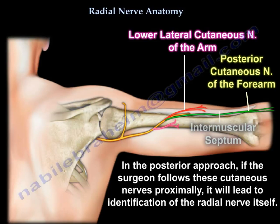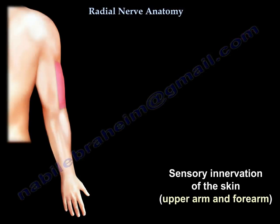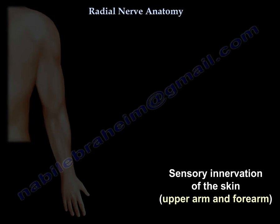In the posterior approach to the humerus, if the surgeon follows these cutaneous nerves proximally, it will lead to identification of the radial nerve itself. This diagram shows the sensory innervation area of the skin of the upper arm and forearm for the radial nerve.